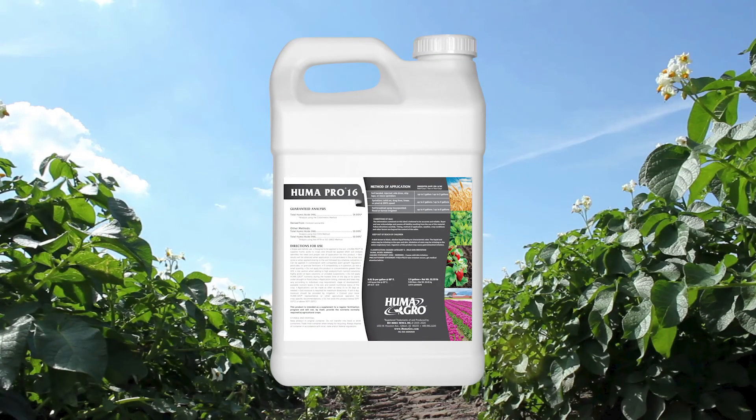Humapro 16 is an activated liquid carbon source derived from oxidized sub-bituminous coal mined from upper Cretaceous Fruitland formation geologic deposits in the San Juan Basin of New Mexico. It is a 16% humic acid based on the colorimetric analysis method that treats unbalanced soil conditions caused by a lack of humic acid, promoting a stronger, healthier soil for sustainable plant growth.